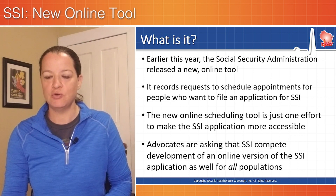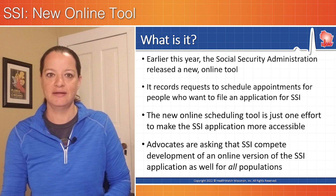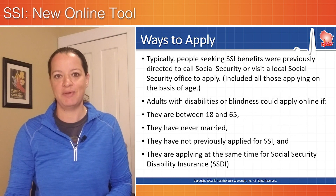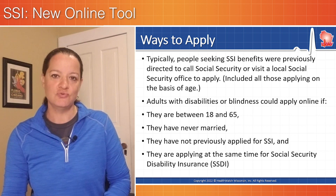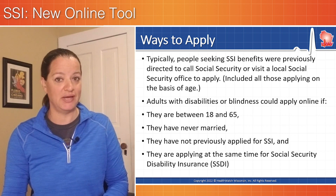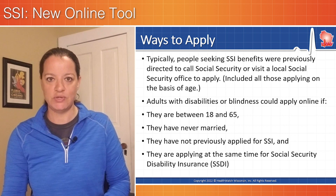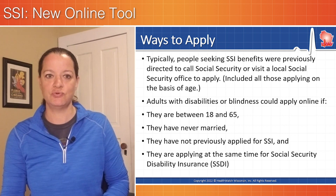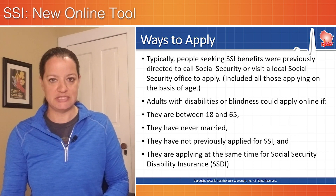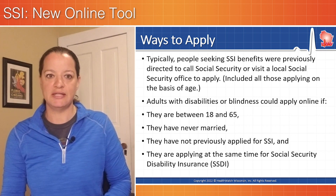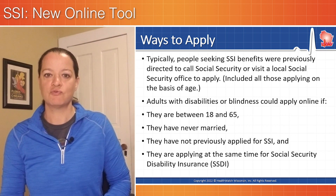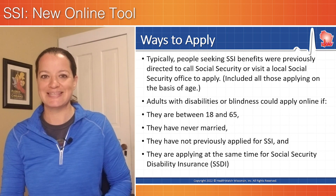Right now, it's pretty limited who can apply for SSI online. Typically, people seeking SSI benefits were directed to call Social Security or go in person to do their application. You could apply online if all of the following conditions were true: you were between the ages of 18 and 65, never married, have not previously applied for SSI, and are also applying at the same time for Social Security Disability Insurance, SSDI.